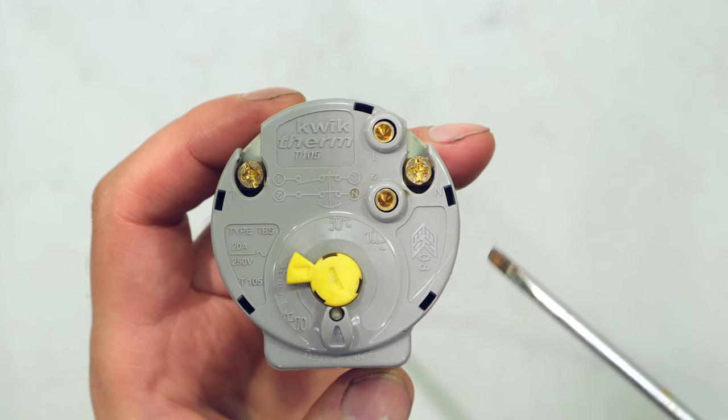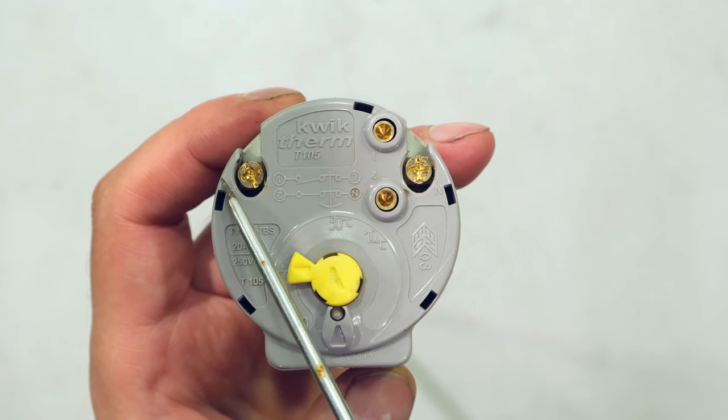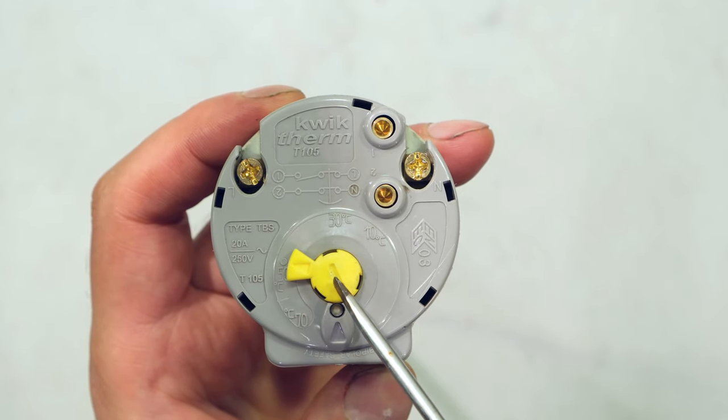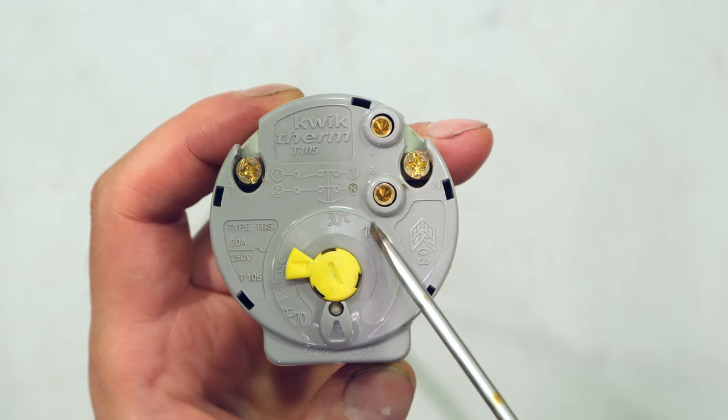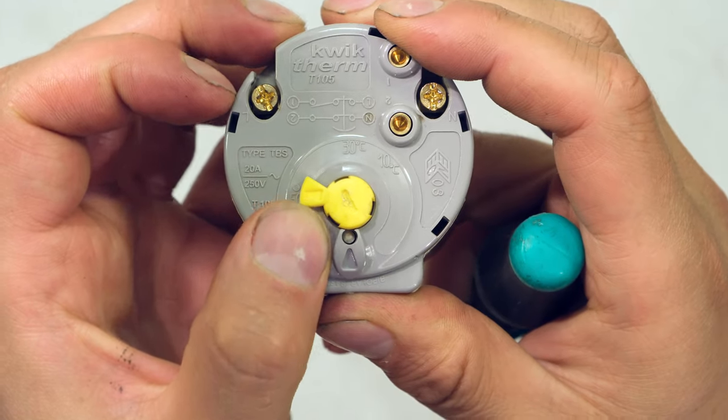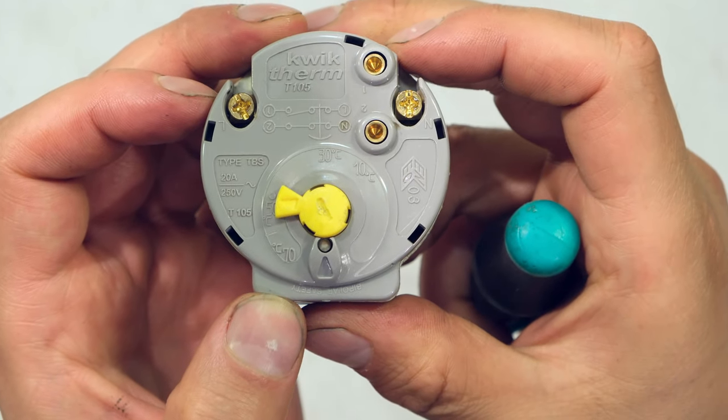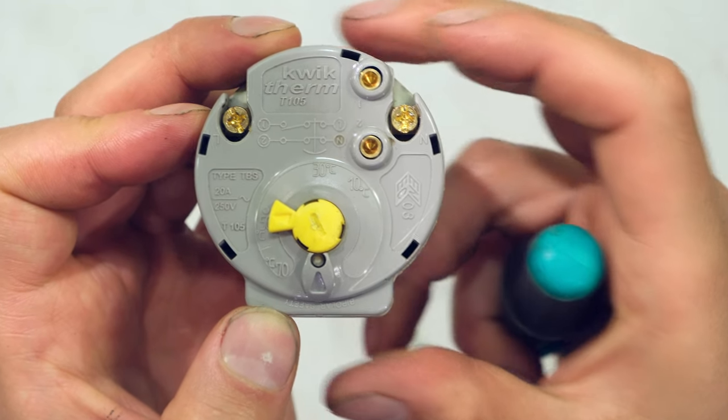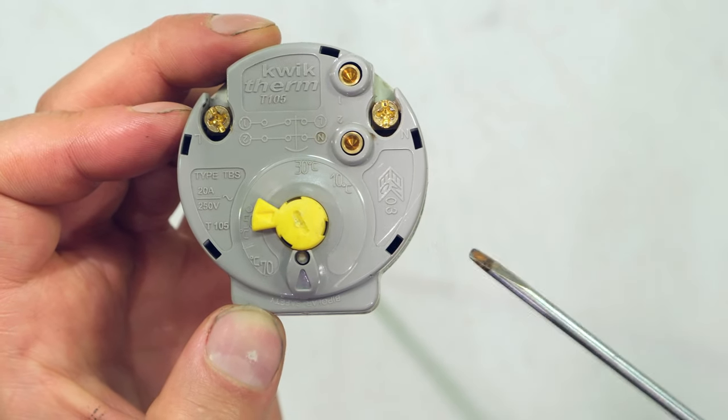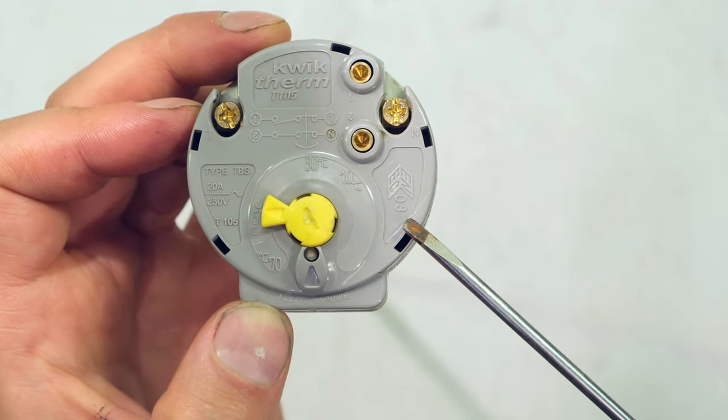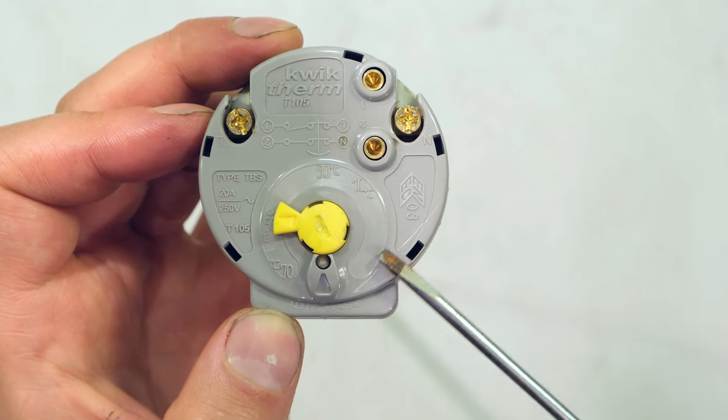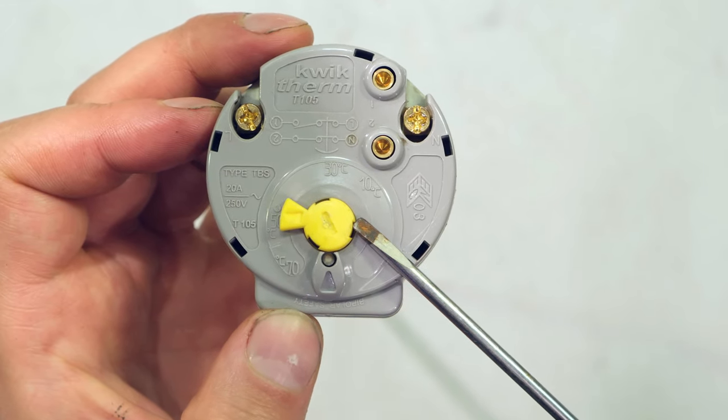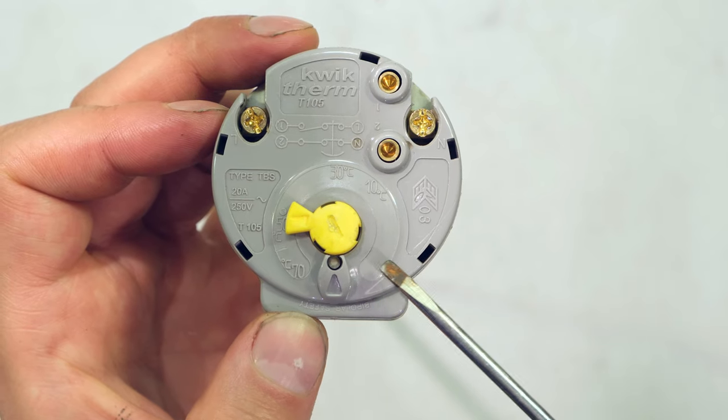Right over here I have the face of the thermostat. There is the neutral and on this side is the live. And over here I've got the temperature selector - this is in degrees centigrade. So if I move this to there, I've now set the thermostat to 50 degrees. That means that the thermostat must remain in a closed position until the water temperature reaches about 50 degrees. It's not exact because of hysteresis, but that's a whole other video.